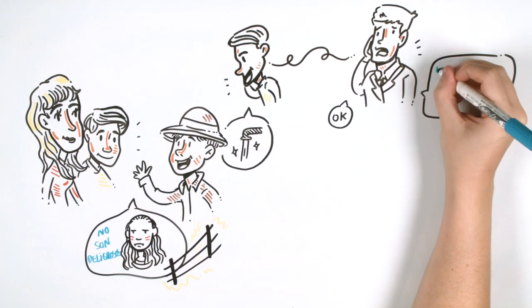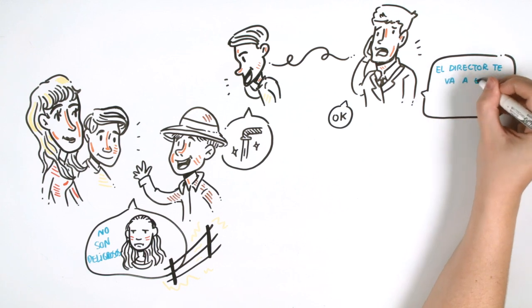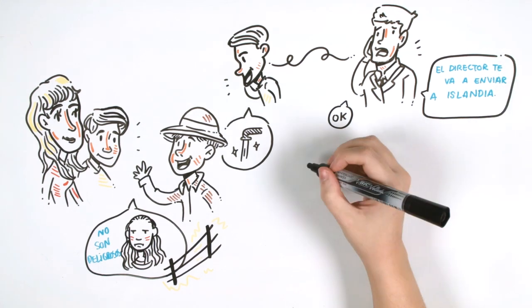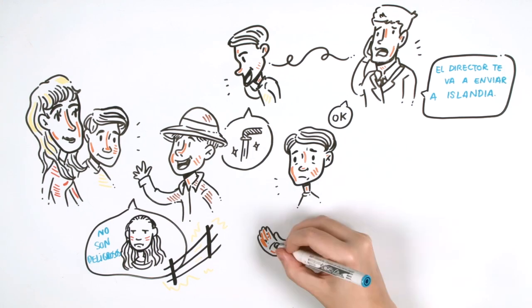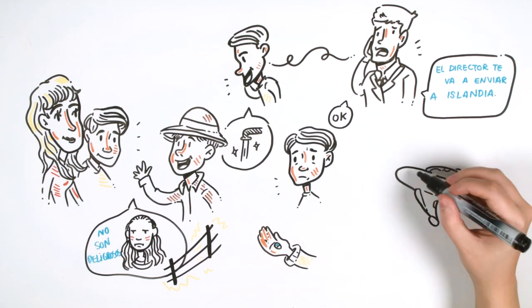He took the opportunity to tell his friend that the director had said that he would be sent to Iceland. Bernard's heart stopped. He was so terrified that he accepted Lenina's Soma tablets. Then they got on the roof to leave on the plane.